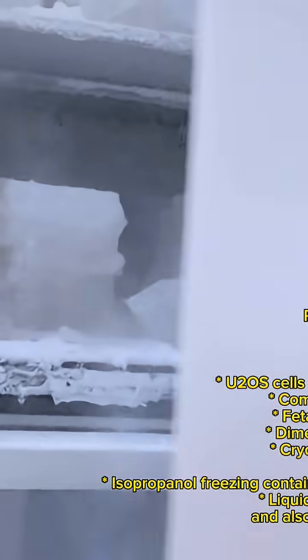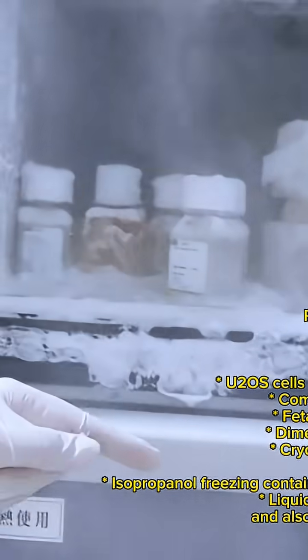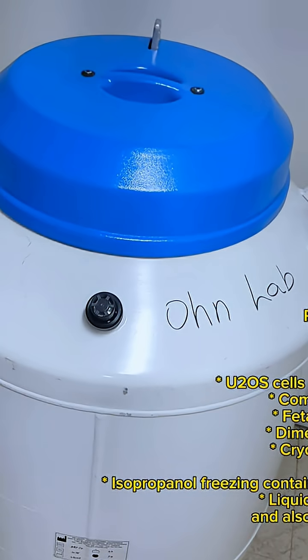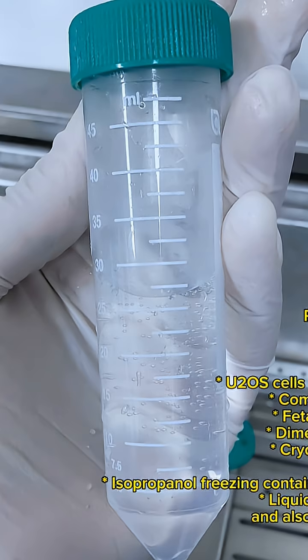You'll also need an isopropanol freezing container, such as Mr. Frosty, or a controlled rate freezer, liquid nitrogen storage tank, and also PBS and trypsin EDTA.